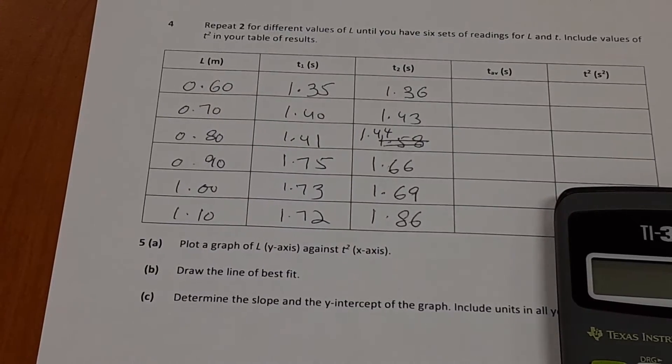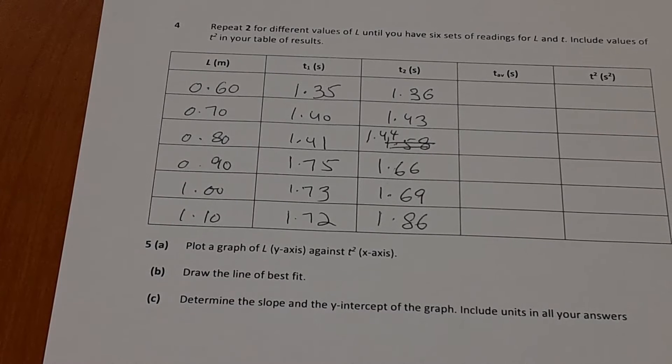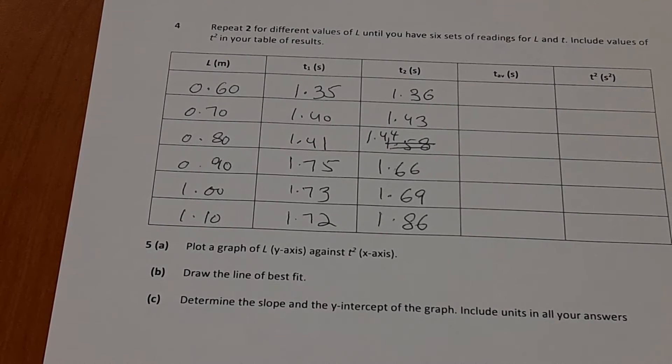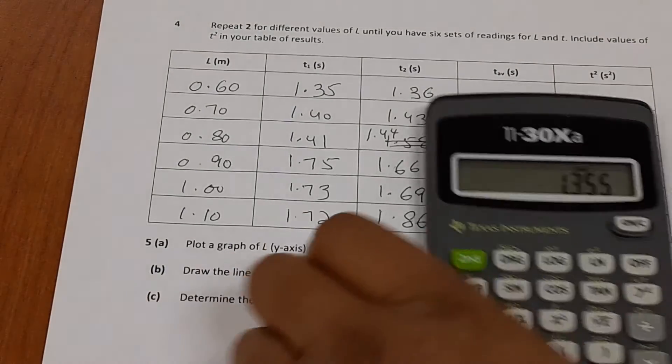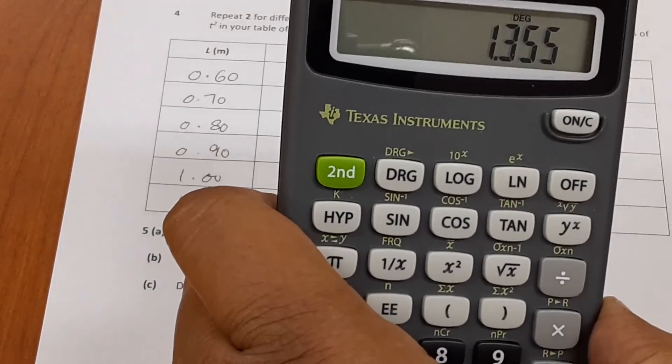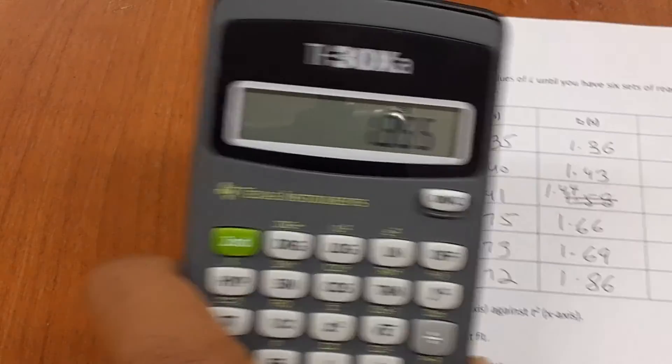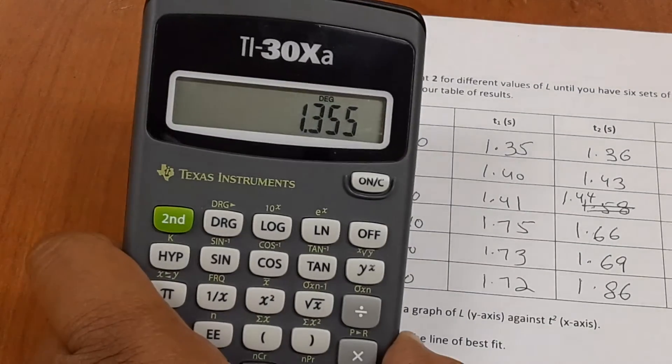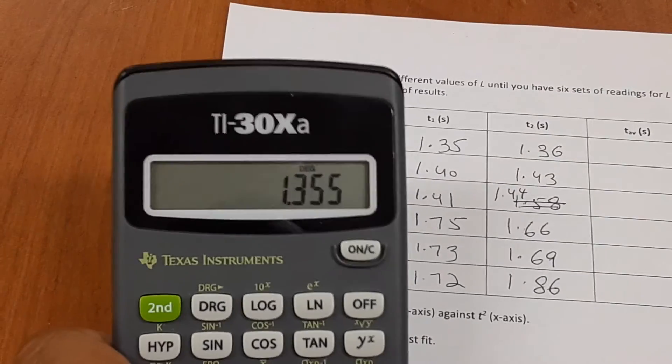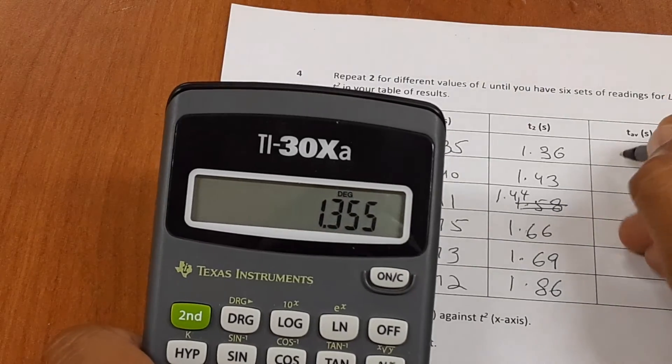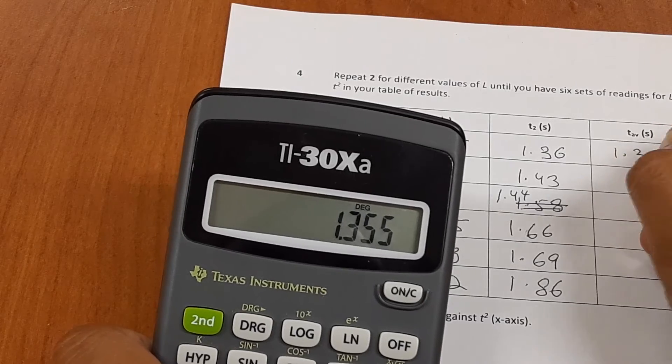Now that I have my raw readings, what I need to do now is calculate the average. So for the first set of readings, I have 1.35 plus 1.36, and then I divide the sum by 2. And the calculator says 1.355. But I have to consider that the actual values that I had for time were both three significant figures, 1.35 and 1.36. So I have to write 1.355 also to three significant figures. So I would write this as 1.36.